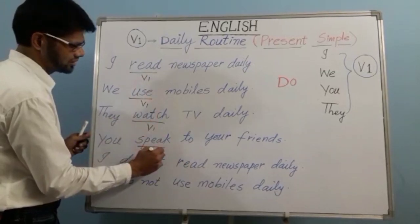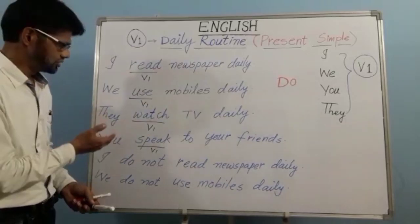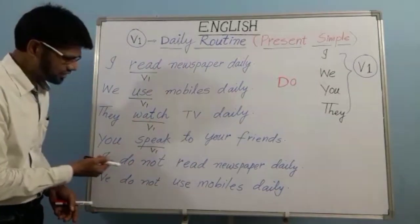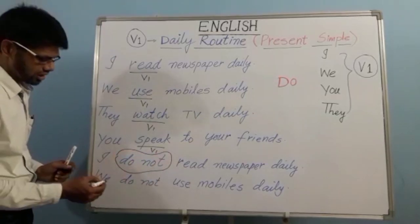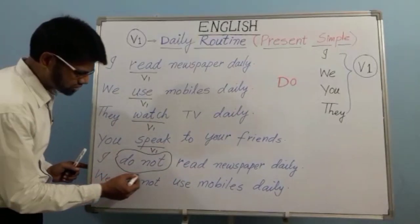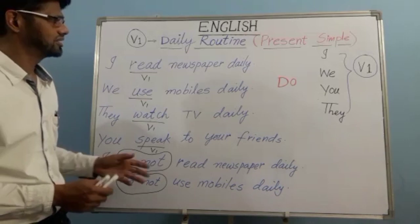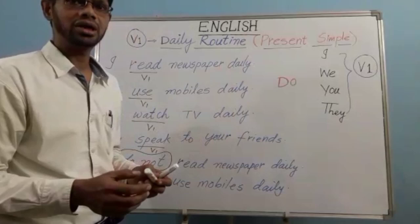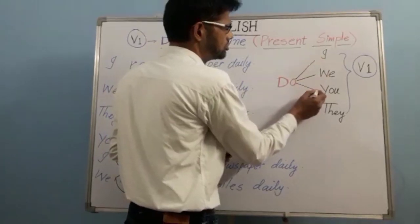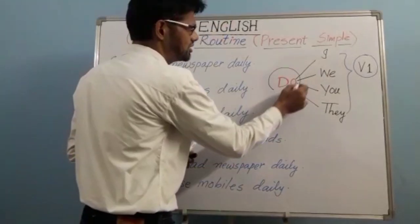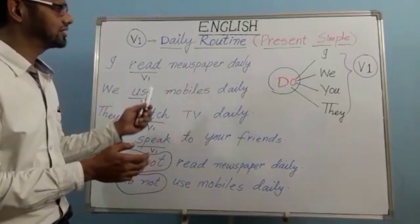As you can see, I have written V1 form on the board. Affirmative: I read newspaper; we use mobile daily; they watch TV daily; you speak to your friends daily. Negative form uses 'do not' — I do not read newspaper daily. For questions, place 'do' at the start: Do I read newspaper daily? Do we? Do you? Do they?